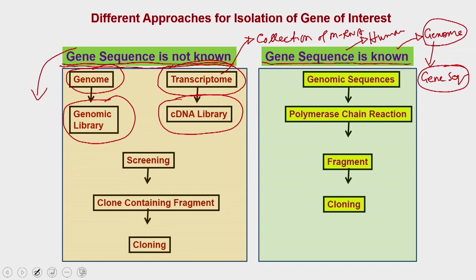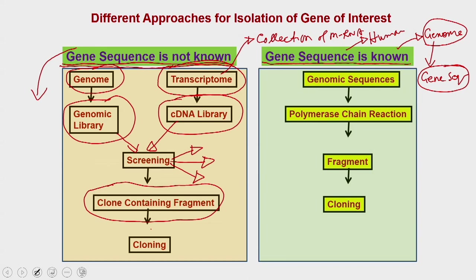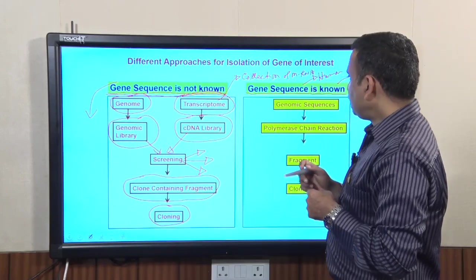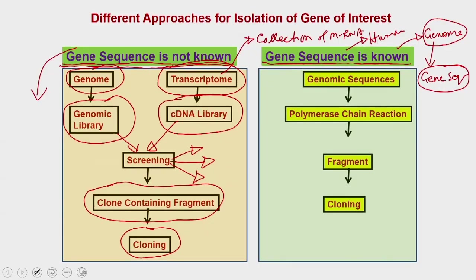Once you prepare the genomic library or the cDNA library, you have to screen them for the particular gene sequence. After screening, you get a clone containing your fragment, which you then clone into a cloning vector or expression vector and check whether the gene expresses your desired product.